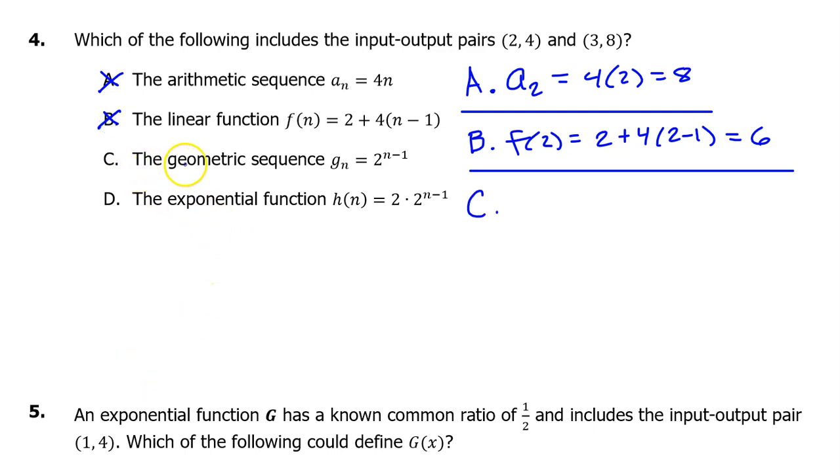Let's evaluate option C at 2 and see if we get 4. So we will have G_2 equals 2 to the (2 minus 1) power. But that's going to be 2 to the 1 power, which is 2. This is not 4, so C is not the answer. So I'm really hoping the answer is going to be D.